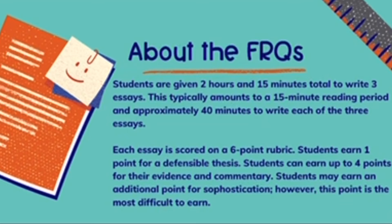The second section of the AP Lang exam is for the essays, or free response questions. This section takes longer because it involves writing three essays. Students are given two hours and 15 minutes. There is a recommended reading period of 15 minutes, and then it's recommended that students spend approximately 40 minutes on each of the three essays — though technically it's rolling time, so students can spend as little or as much time on any essay as they want. Each essay is scored using a six-point rubric, with a different rubric for each essay type, though the rubrics have the same categories. The first point on each rubric is the thesis point — students get one point for a defensible thesis.